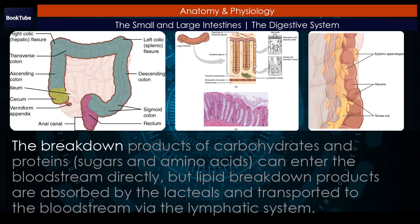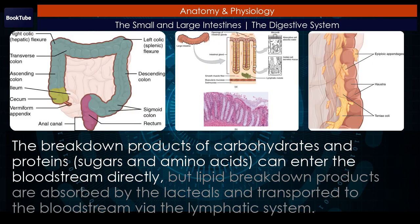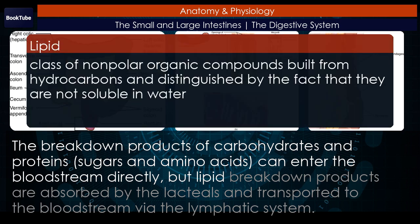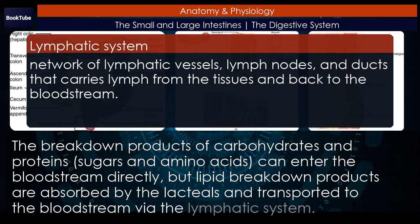The breakdown products of carbohydrates and proteins — sugars and amino acids — can enter the bloodstream directly, but lipid breakdown products are absorbed by the lacteals and transported to the bloodstream via the lymphatic system.